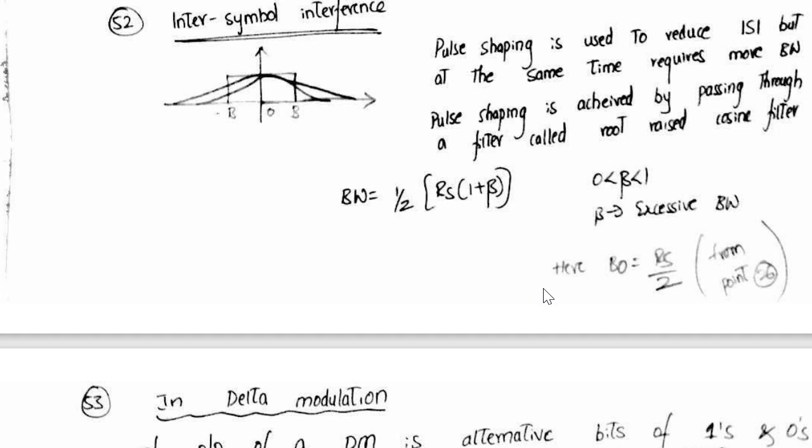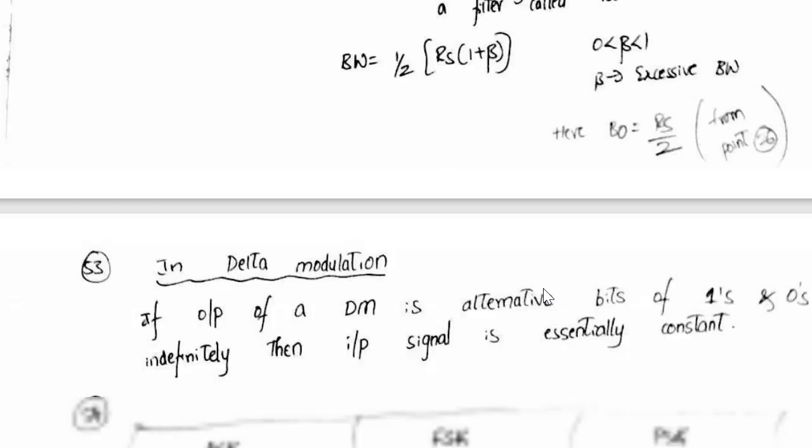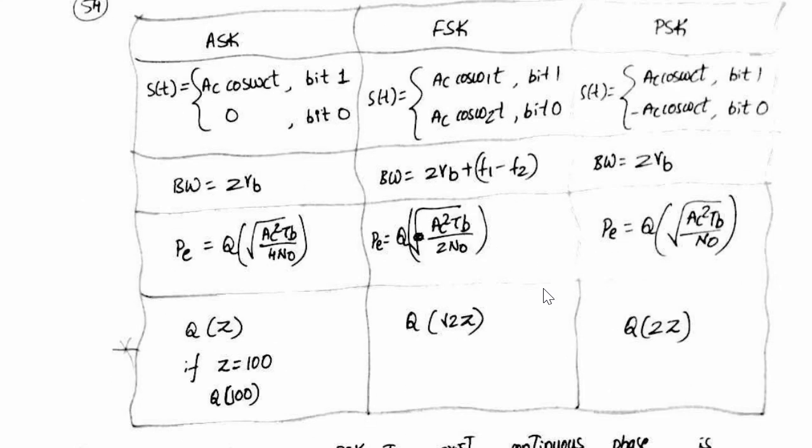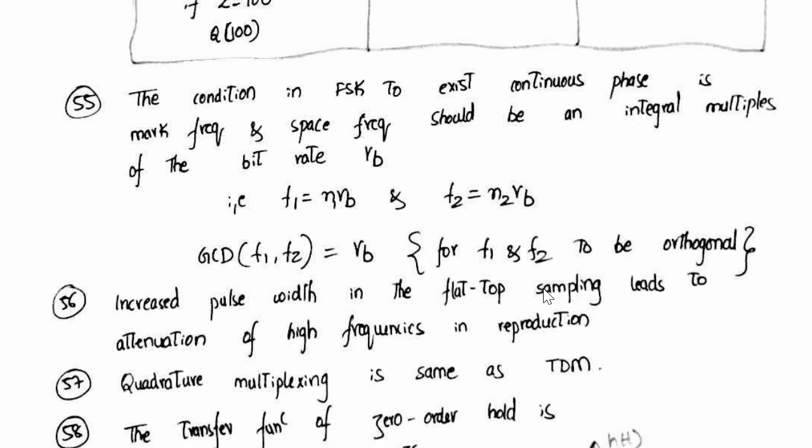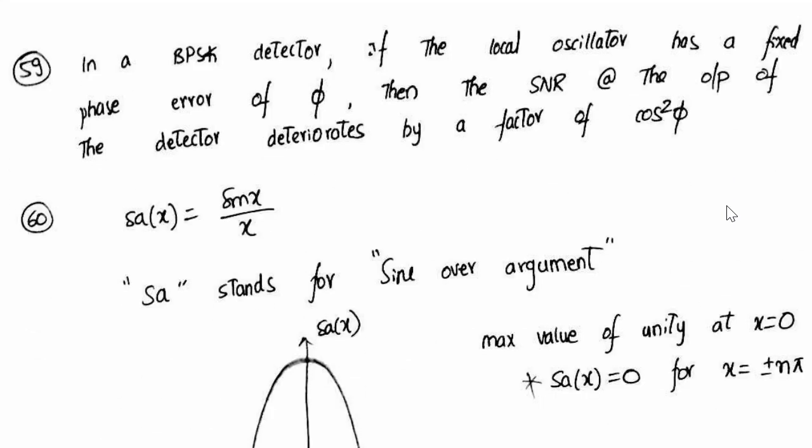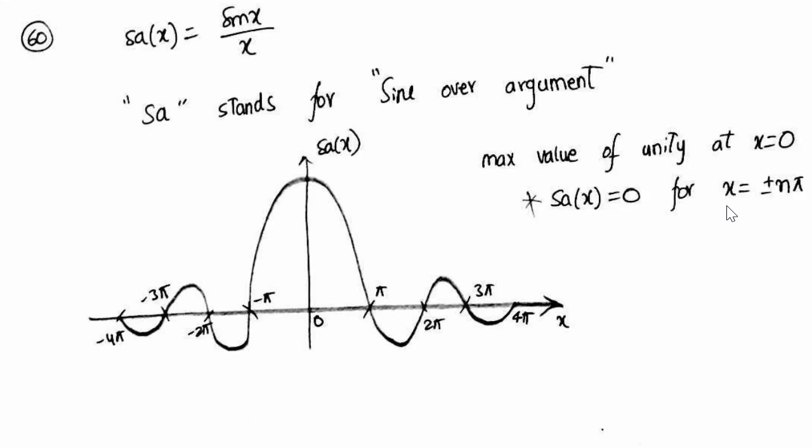Some information related to intersymbol interference. Some things are captured from the previous year question papers. As you can see, some of the concepts are repeating, right? I hope I have displayed all the formulas related to this.